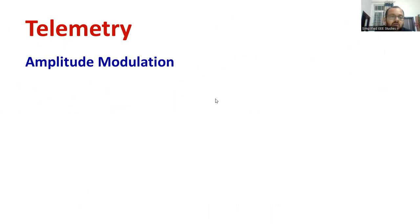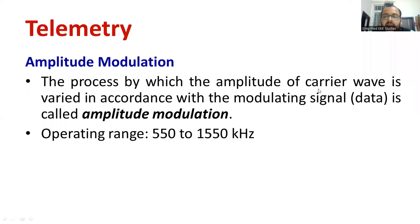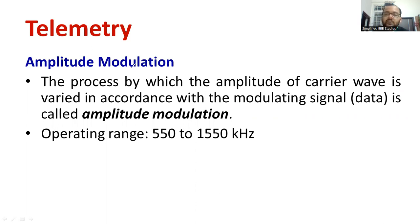Moving on to the definition of amplitude modulation. The process by which the amplitude of a carrier wave is varied in accordance with the modulating signal is known as amplitude modulation. We have a signal, but if you want to transmit it, it is not viable or feasible. So we are going to vary the pattern of the signal with respect to a carrier signal. Here, we are mainly focusing on changes in amplitude, while frequency is kept constant. That is why it is known as amplitude modulation.